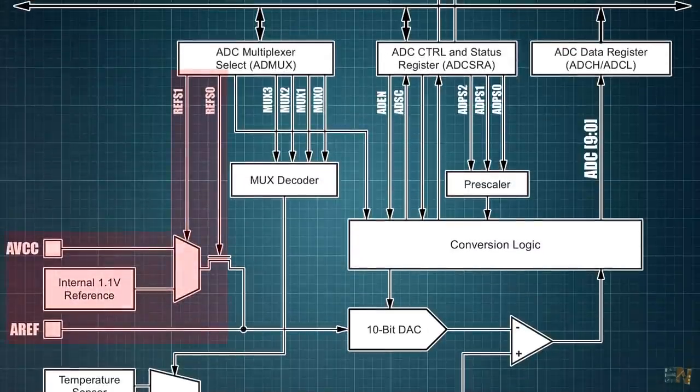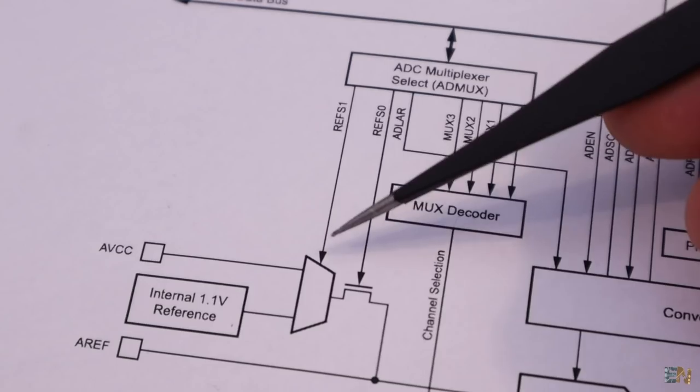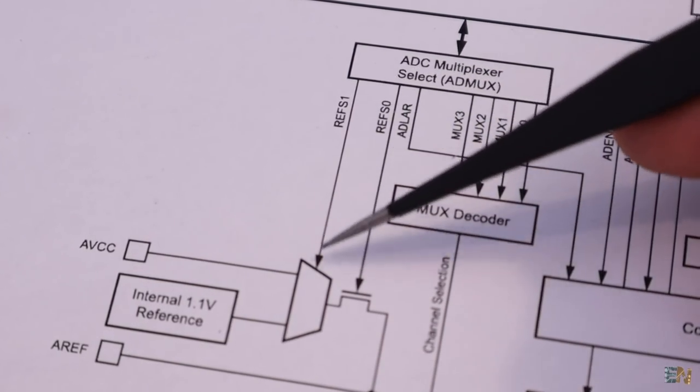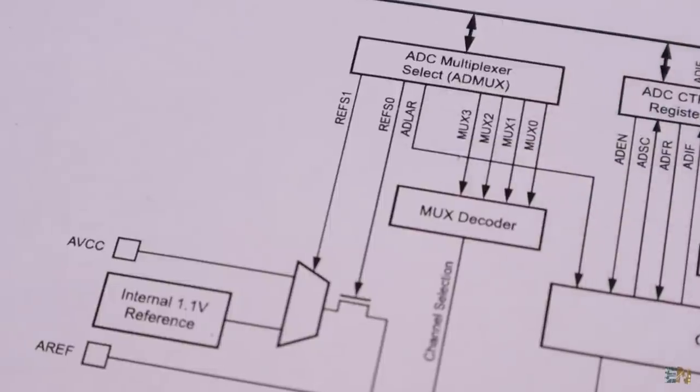But in order to select these analog references, we need to set them in the code. As you can see here, to select between these 3 reference inputs, we need to use the REFS1 and REFS0 bits.